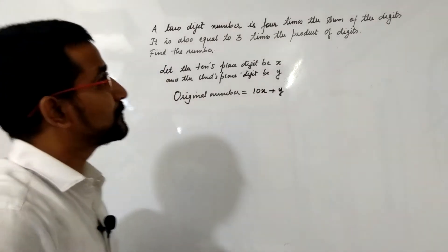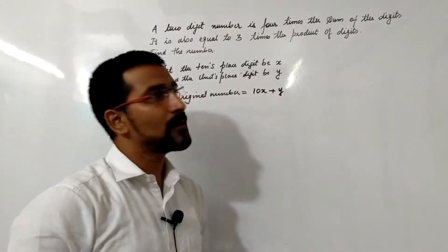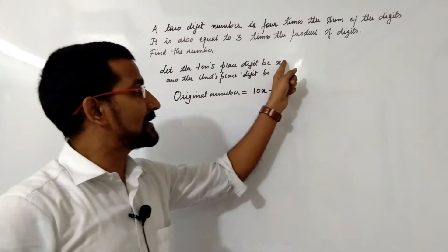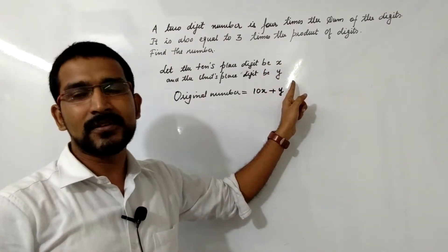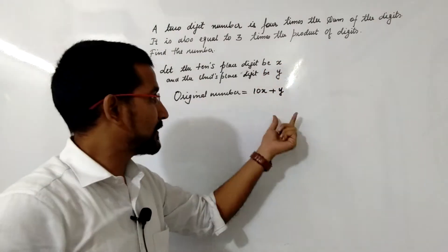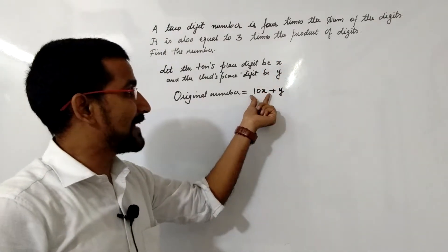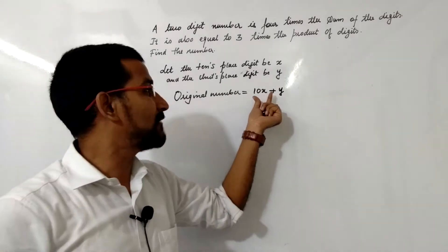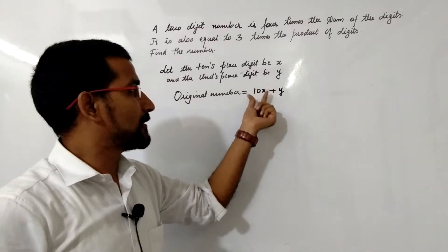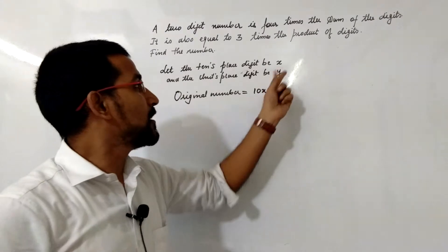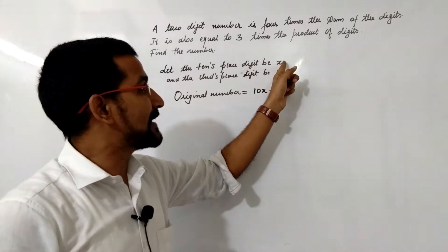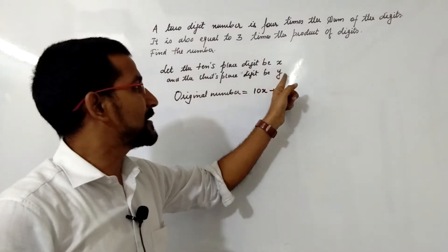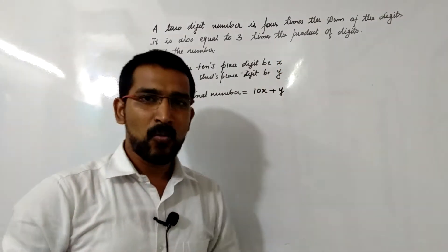Now applying the conditions given. Condition 1: a two-digit number is 4 times the sum of its digits. The digits here are x and y. Many students think that 10x is a digit — no, 10x is the place value. The tens place digit is x and the units place digit is y.